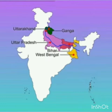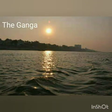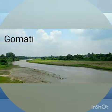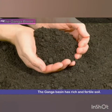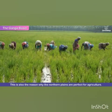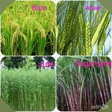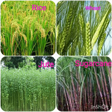Bihar and West Bengal, forming the Ganga basin. This region is watered by the river Ganga, the Yamuna and their tributaries — Gomti, Gandak, Ghaghra and Kosi. The Ganga basin has rich and fertile soil, which is why the northern plains are perfect for agriculture. Its major crops include rice, wheat, jute and sugarcane.